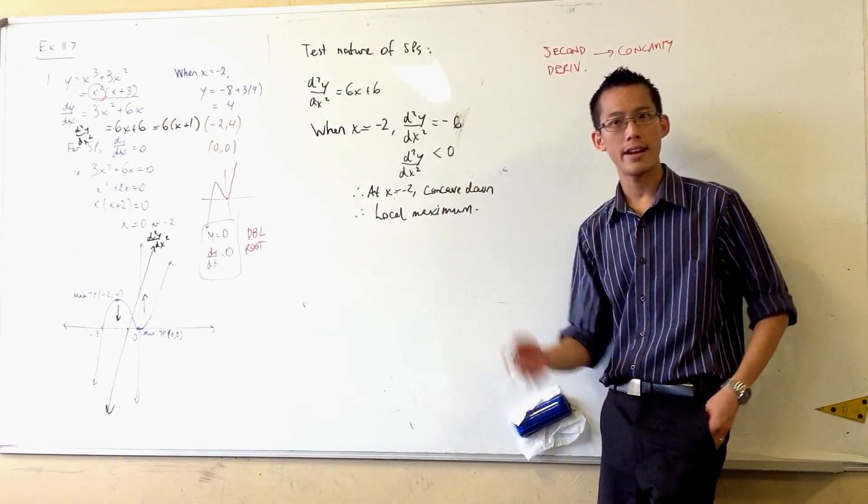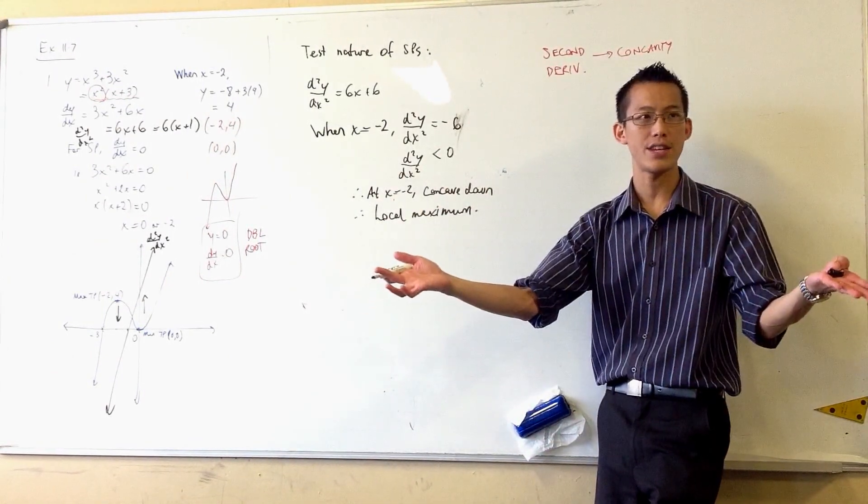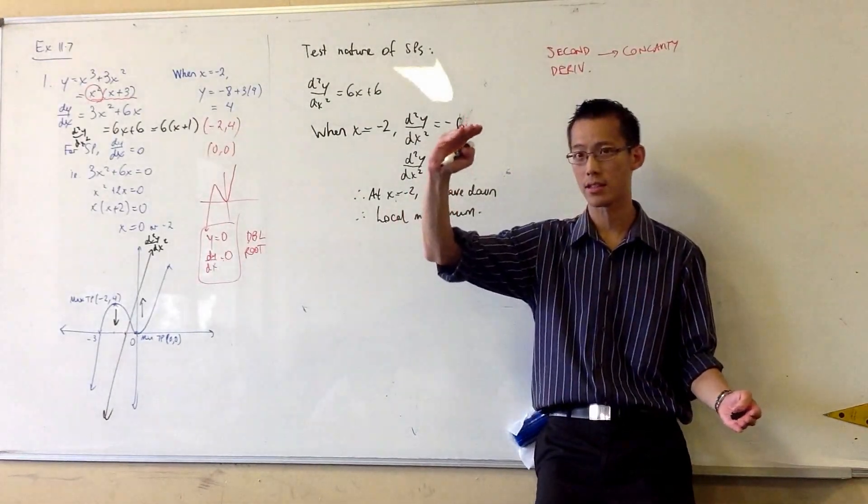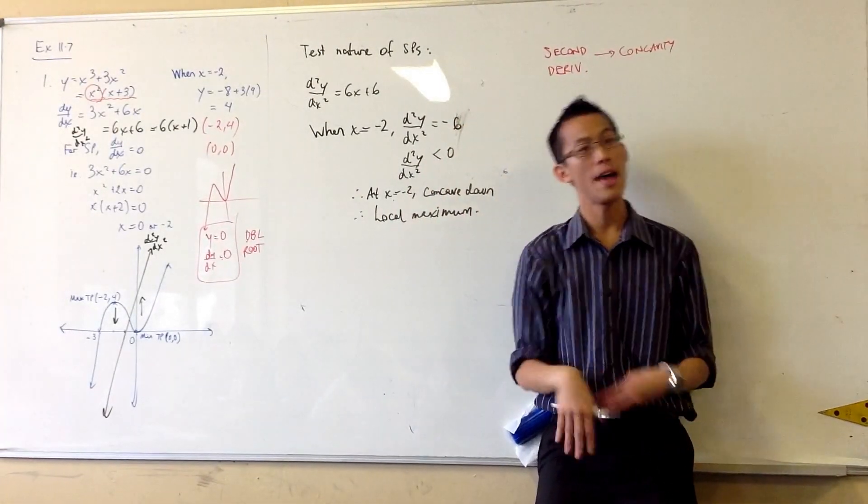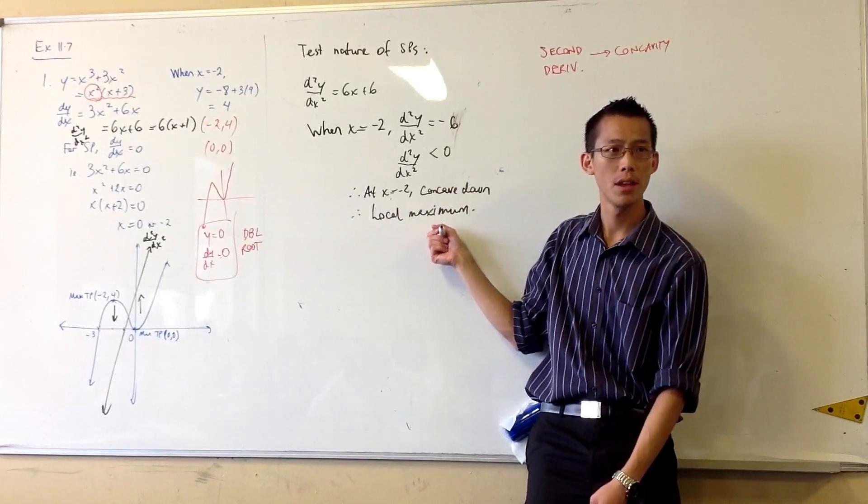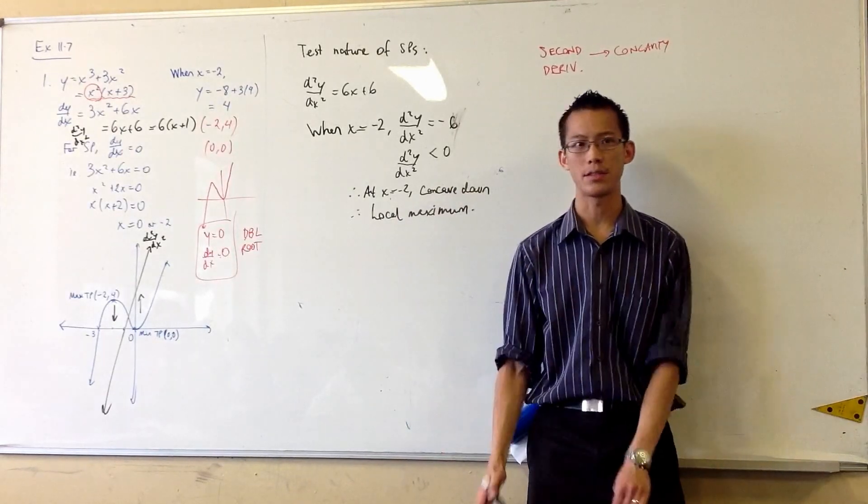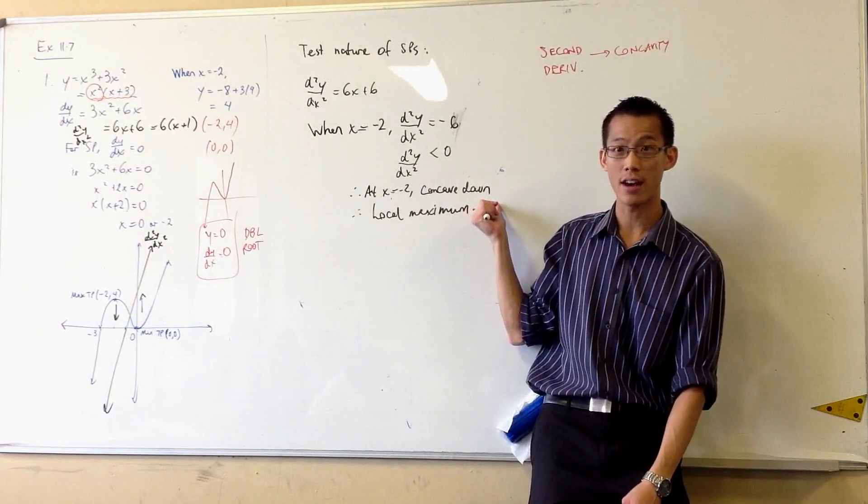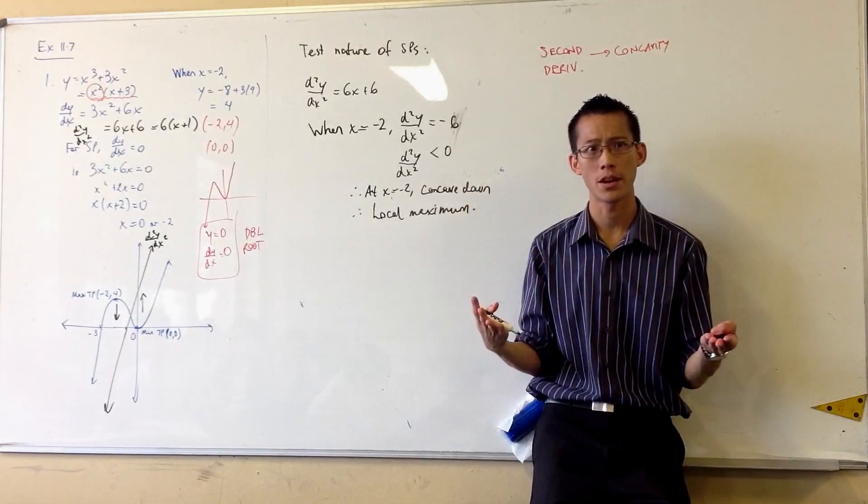So before, we looked at either side of the stationary point and we saw, okay, it's going up and then it's horizontal and then it's going down, and that tells you it's a local maximum. But a better way, a faster way of saying going up and then horizontal and then going down, is just saying it's concave down. Do you see how they amount to the same thing?